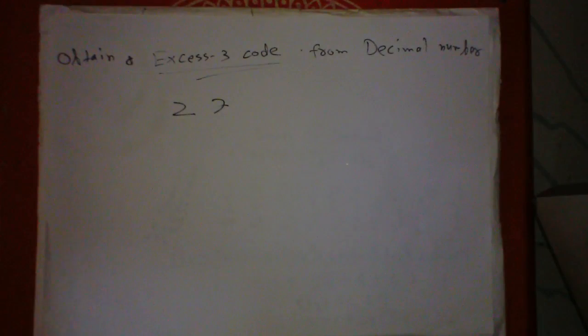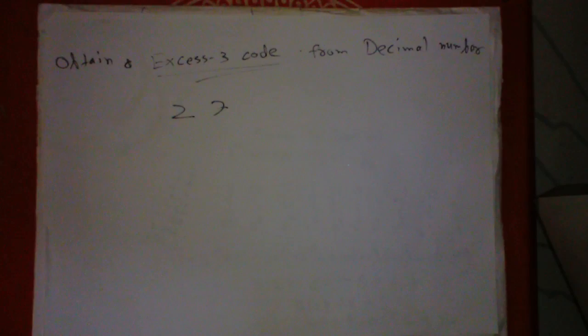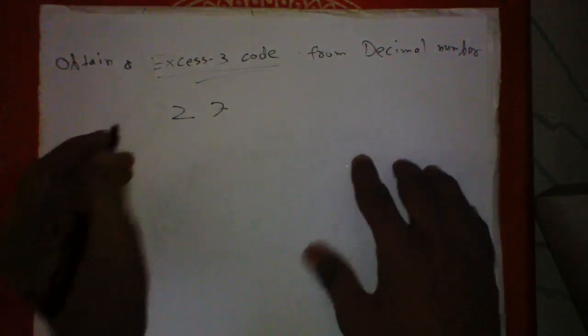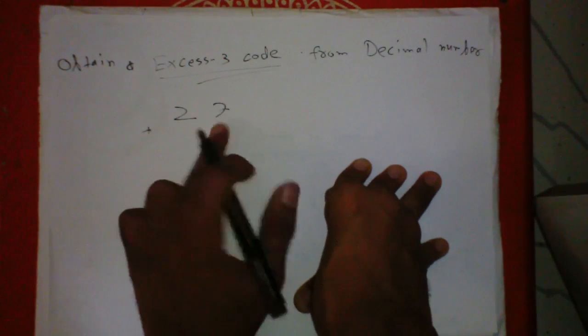What is Excess-3 code? Excess-3 code is nothing but the addition of 3 to each digit of a decimal number. So we will take 2 and 7 separately, not as 27.